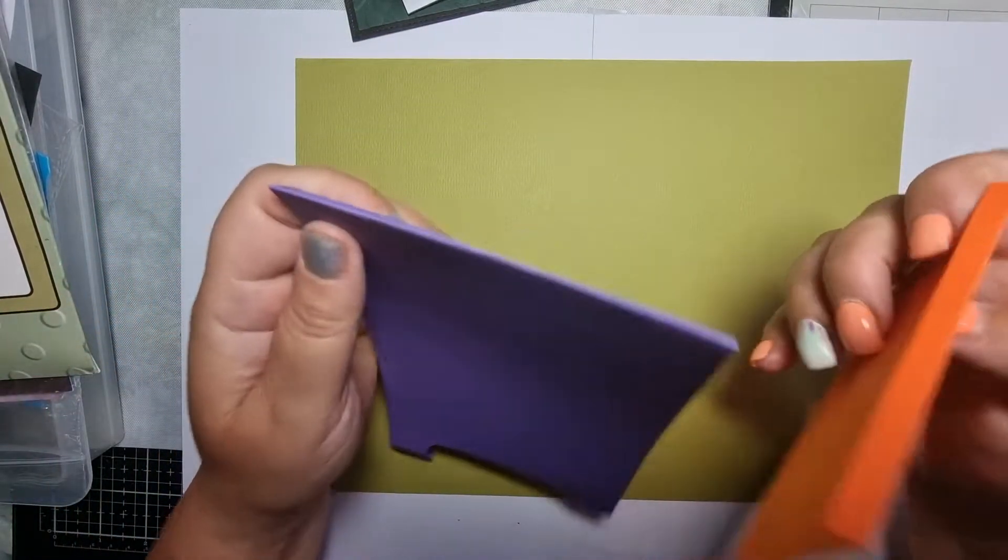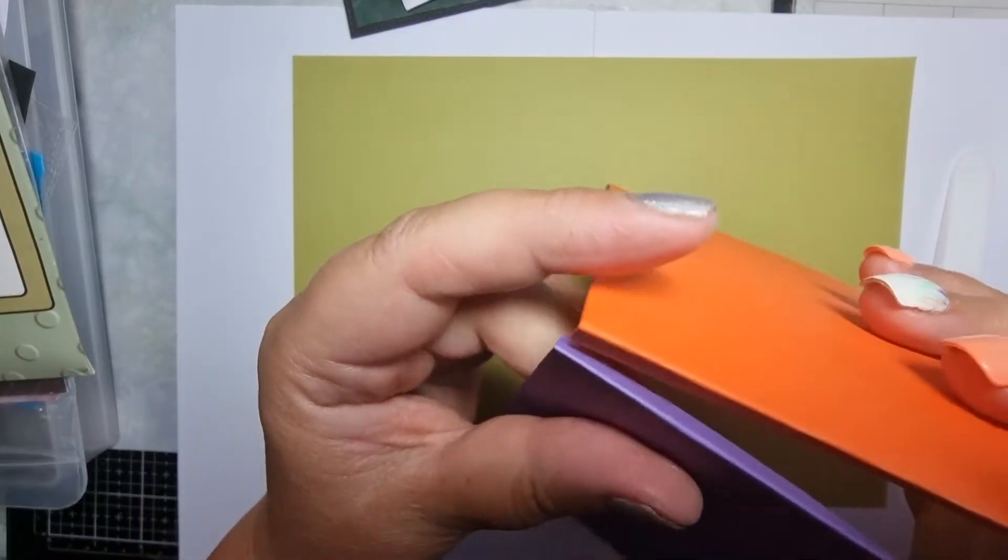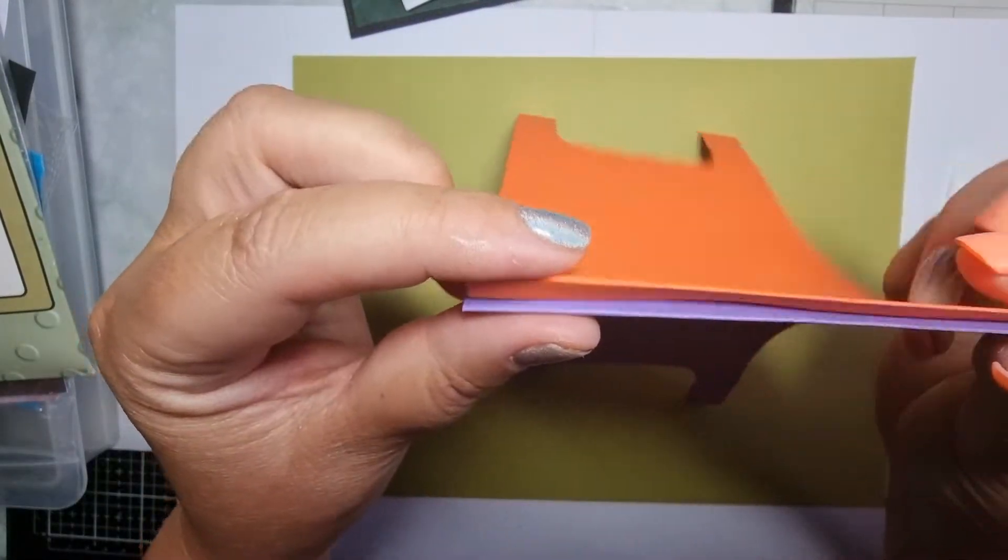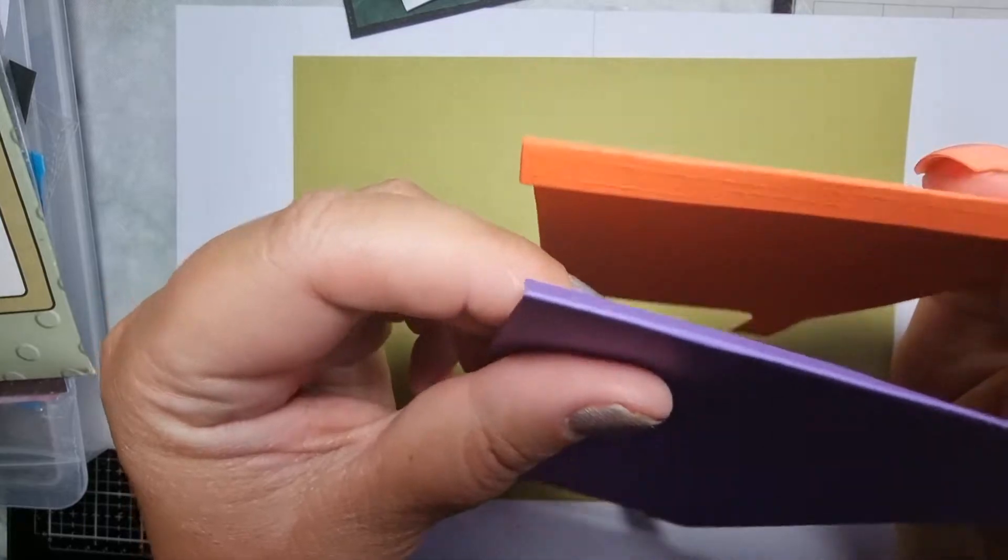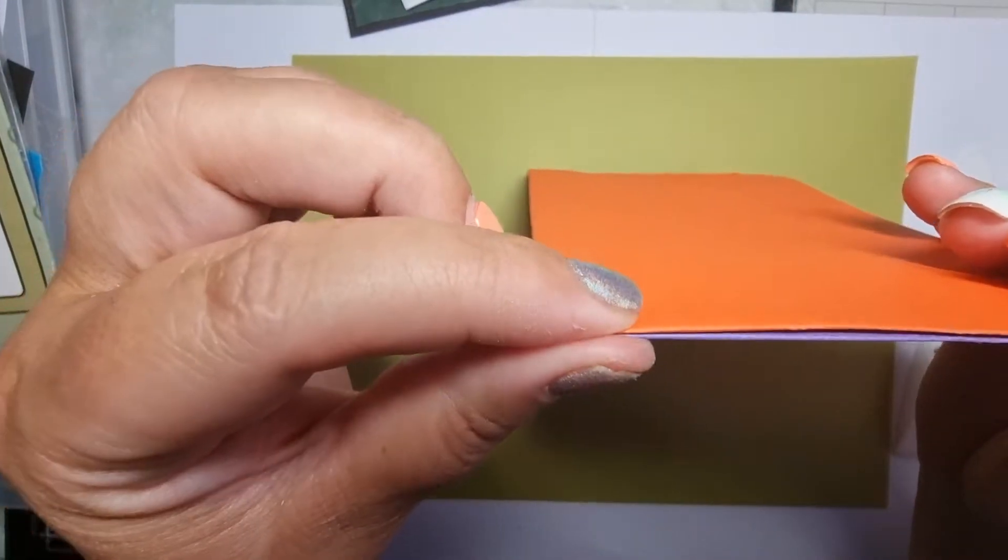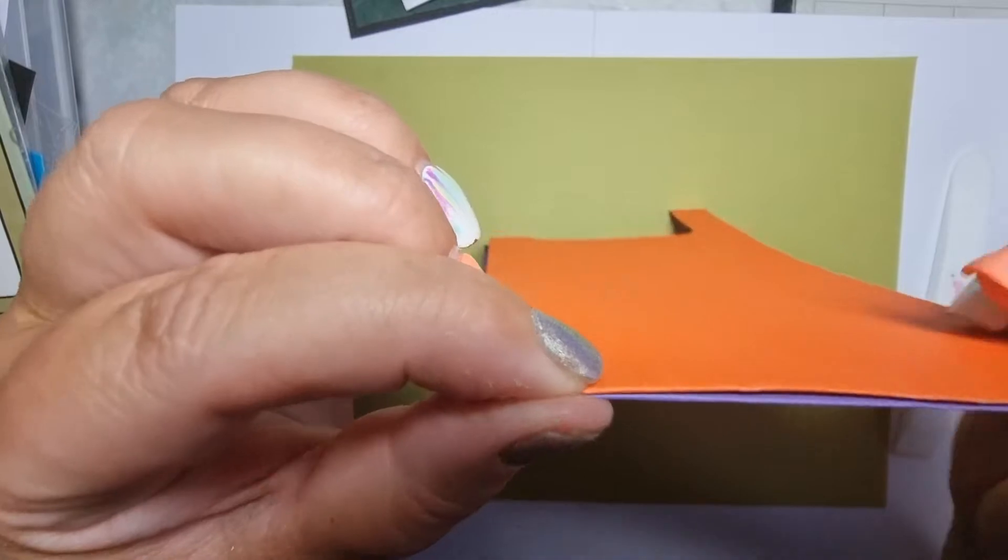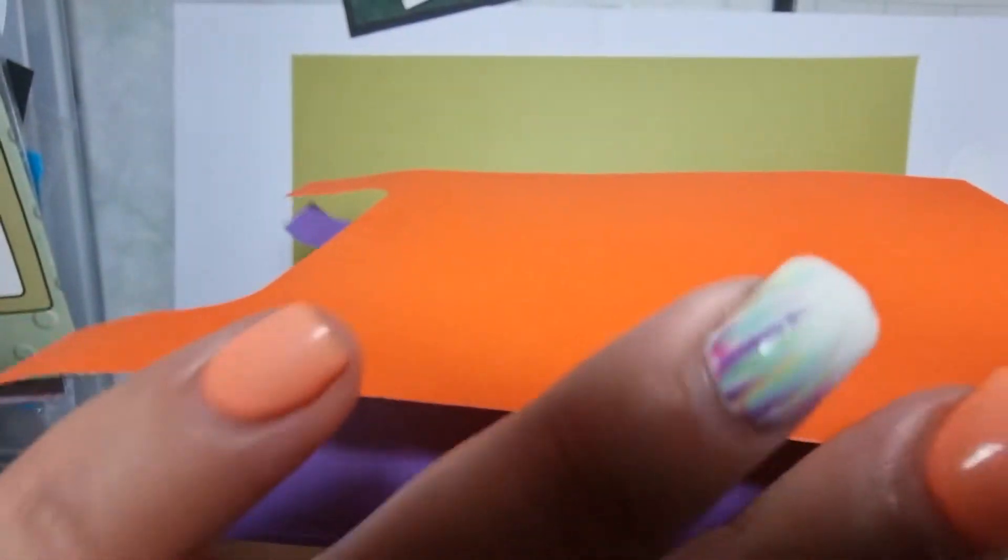There are different ways you can put this together. If you want it to be closed at the top, fold them both in and then basically just glue them together there. So they're both folded in.